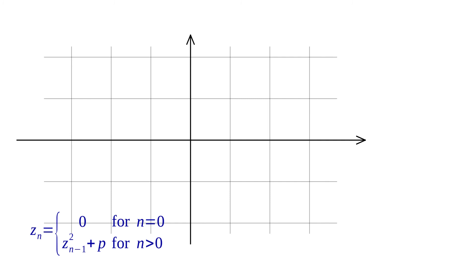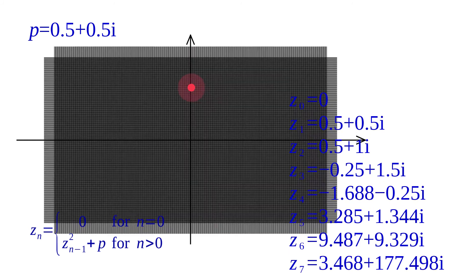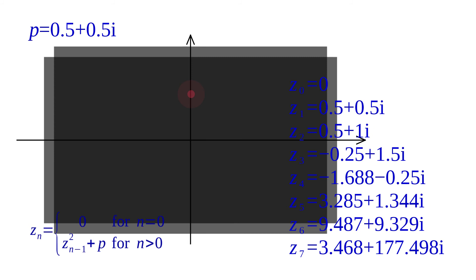Now let's take a complex value for p: p equals a half and a half i. The values we get for Zn are shown. The absolute value of Zn tends to infinity again.